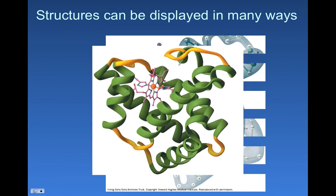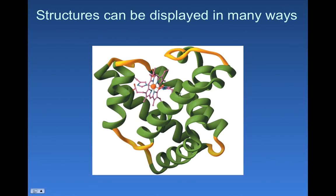Here's another look at myoglobin. This one, we've lost almost all information about individual amino acids. We don't know how many there are. We don't know what sequence they're in.